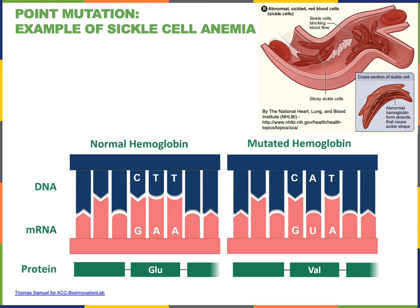While sickle cell disease has many negative health consequences, it is also an example of how a mutation can produce an advantage. Sickle cell anemia protects people from malaria, and this is why sickle cell disease is much more common in Black people — because this mutation protected people against the malaria that is prevalent in tropical regions of Africa.